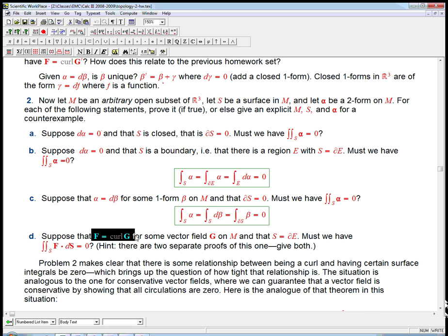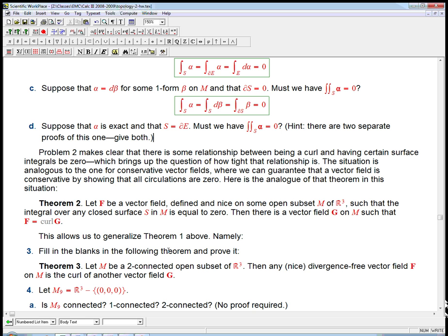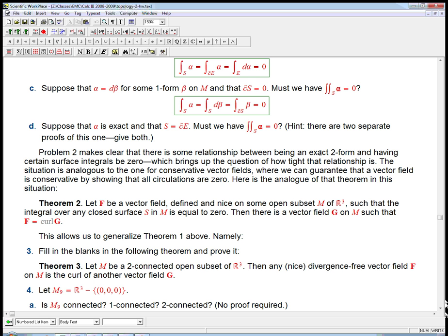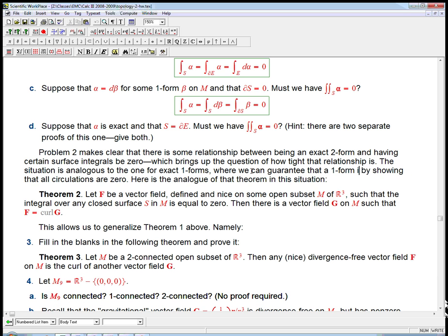And of course, here, if we have both strong conditions, if alpha is exact and that the surface is a boundary, must we have the integral of alpha? Absolutely, for both reasons. Stokes' theorem applied to the one form beta or Stokes' theorem applied to the two form alpha. Either one can be used to do this. So, in the differential form language, I would say problem two makes clear the sum relationship between being an exact two form and having certain surface integrals be zero. And it's analogous, it's exactly analogous to the one for exact one forms.